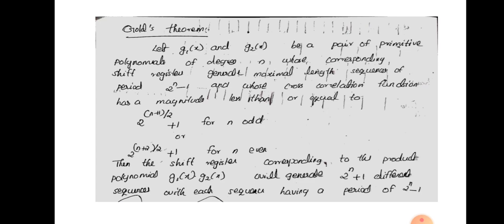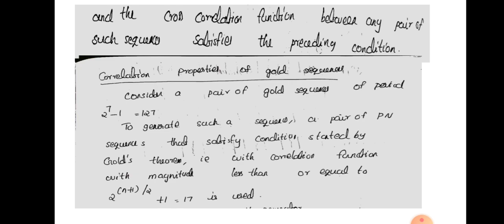Gold's theorem states: Let g1(x) and g2(x) be a pair of primitive polynomials of degree n, whose corresponding shift registers generate maximal-length sequences of period 2^n − 1, and whose cross-correlation function has a magnitude less than or equal to 2^((n+1)/2) + 1 for n odd, or 2^((n+2)/2) + 1 for n even. The shift registers corresponding to the primitive polynomials g1(x) and g2(x) will generate 2^n + 1 different sequences, each with a period of 2^n − 1, and the cross-correlation function between any pair of such sequences satisfies the preceding conditions.